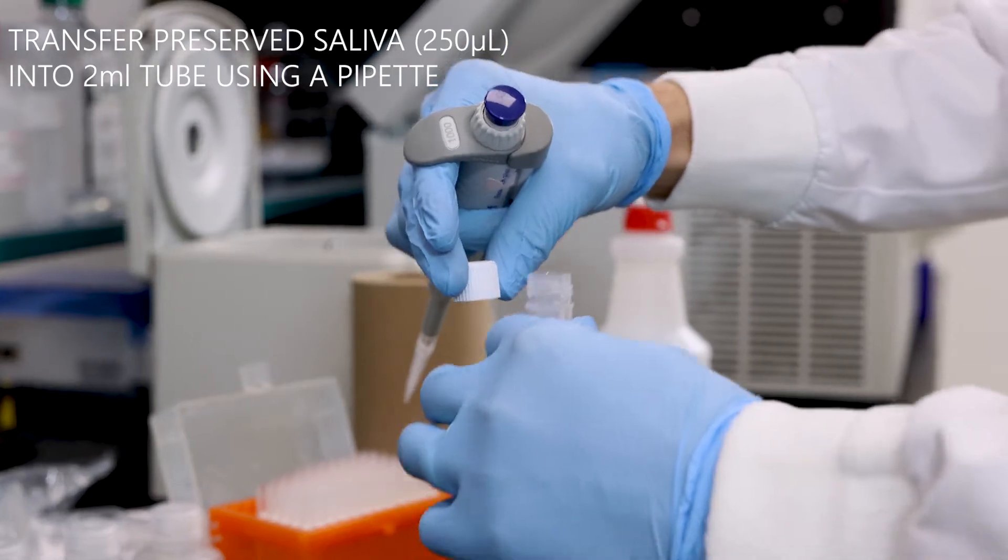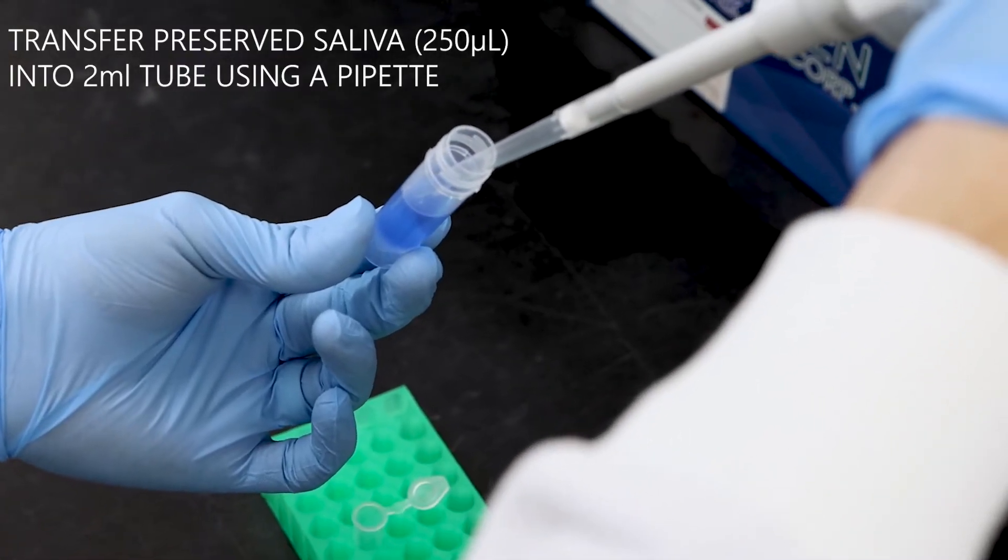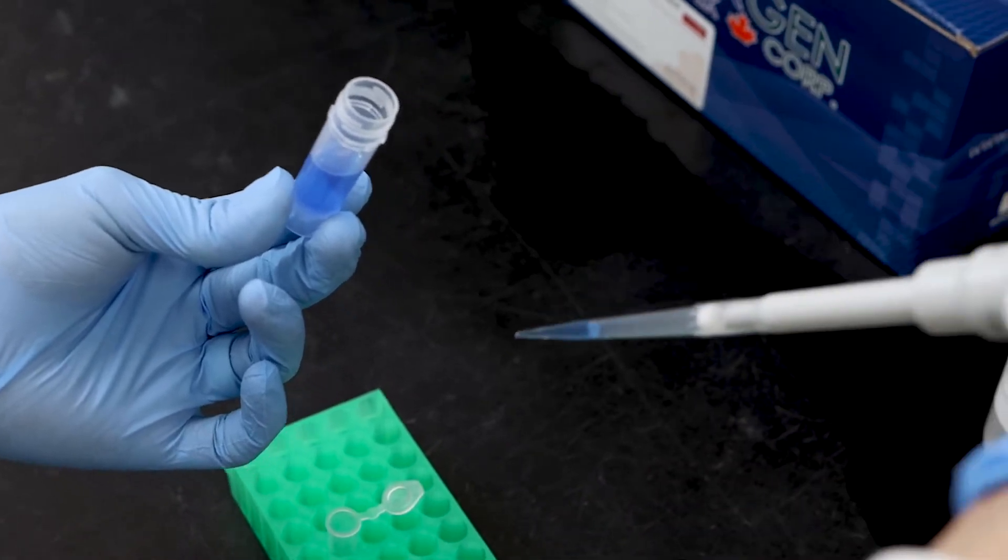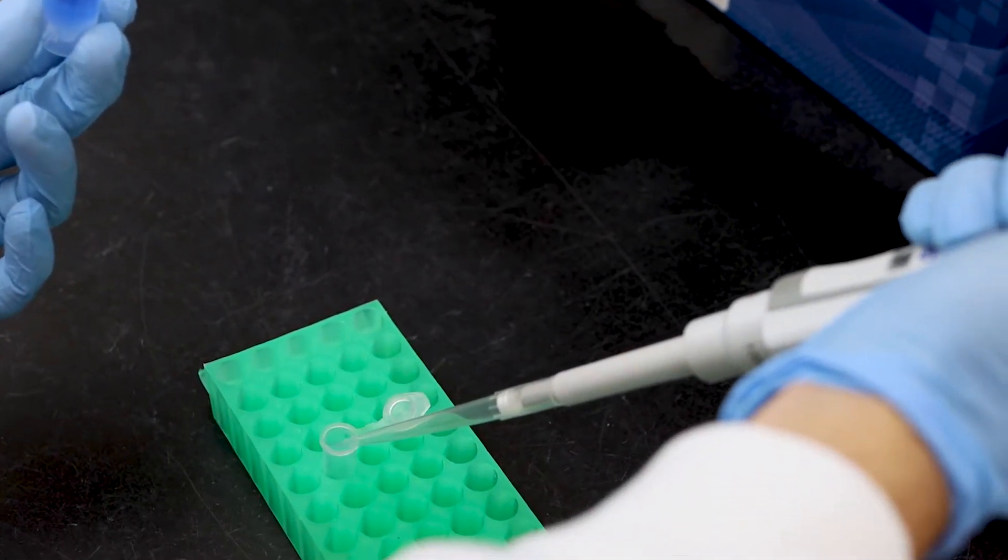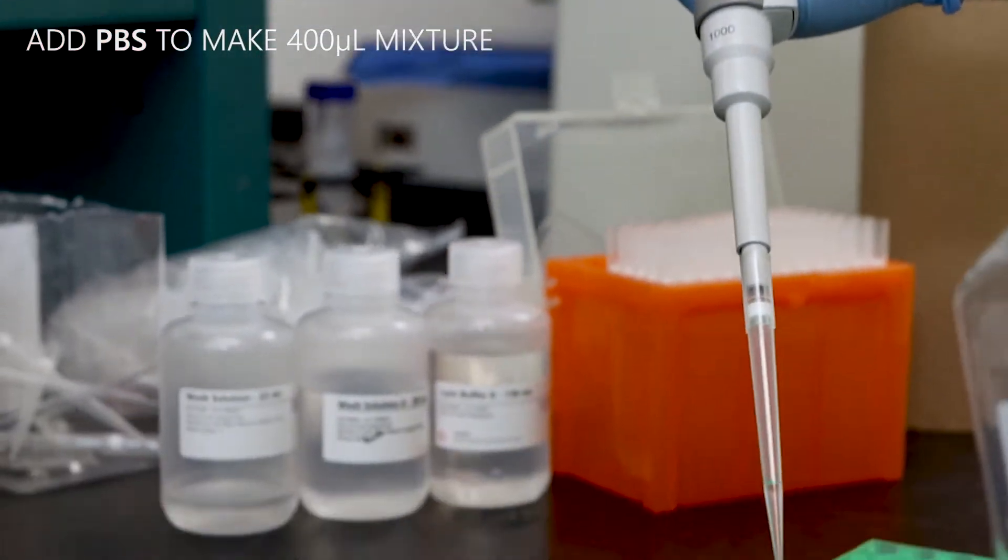Transfer 250 microliters of preserved saliva into a 2ml tube using a pipette. Add PBS until the volume of the mixture is 400 microliters.